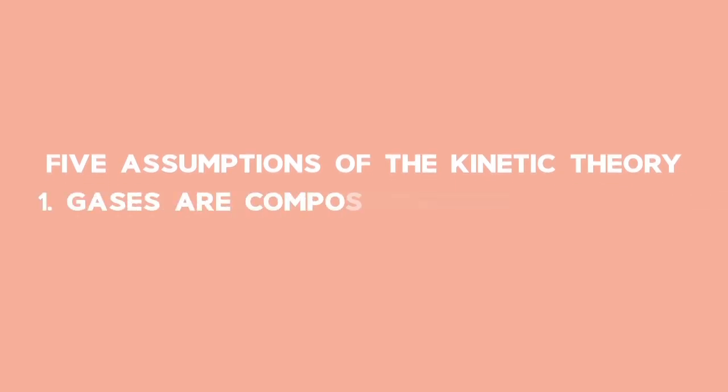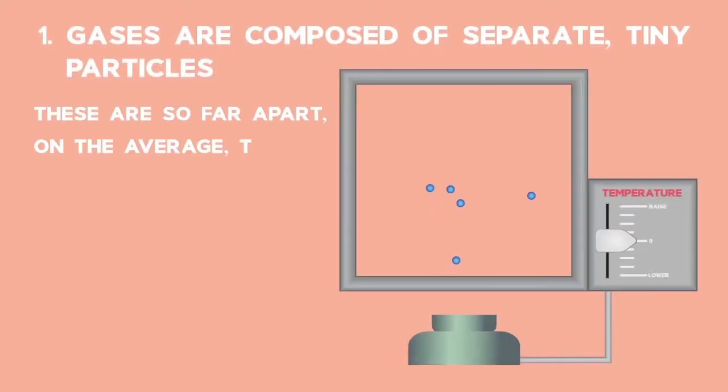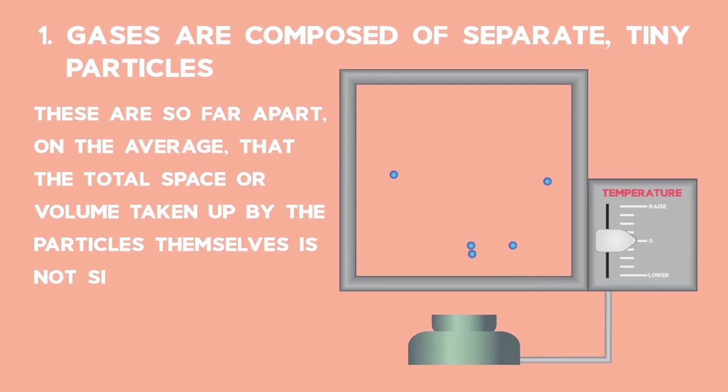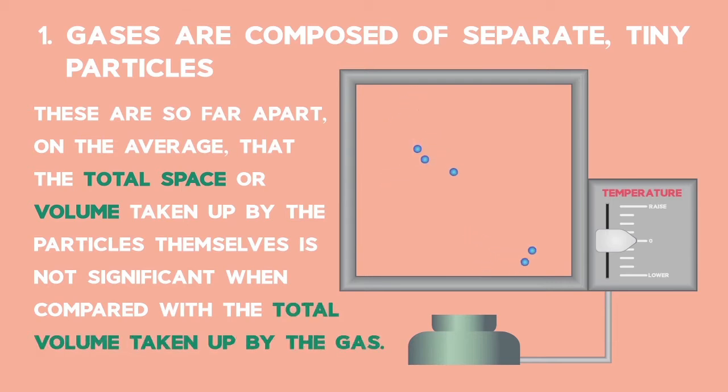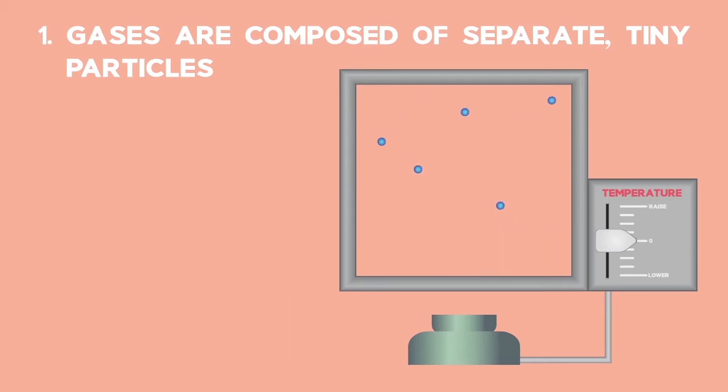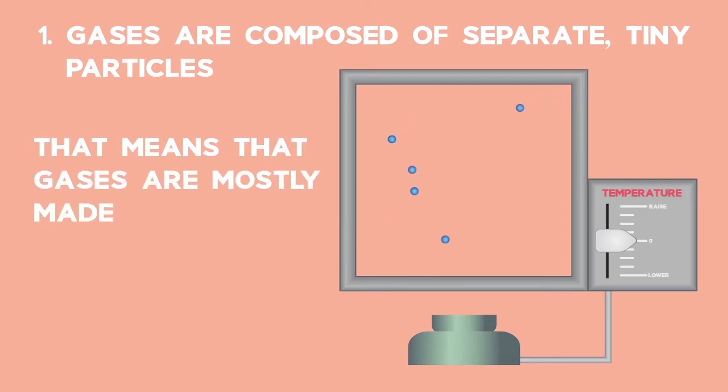Number one. Gases are composed of separate tiny particles. These are so far apart on the average that the total space or volume taken up by the particles themselves is not significant when compared with the total volume taken up by the gas. So that means that gases are mostly made up of empty space.